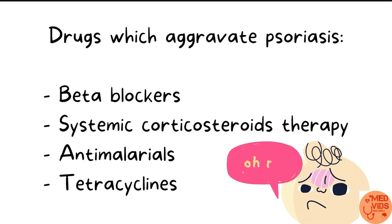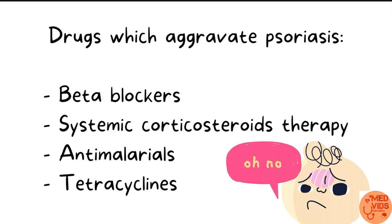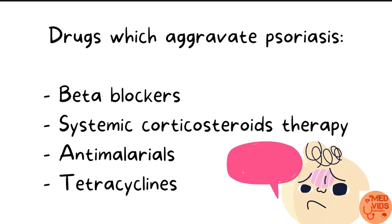Some drugs aggravate psoriasis. Beta blockers, commonly used for hypertension, can worsen psoriasis. One very important thing to remember is that systemic corticosteroid therapy can worsen psoriasis. Initially, corticosteroids may suppress psoriatic lesions, but when corticosteroid therapy is stopped suddenly, there will be sudden worsening and reappearance of a severe form of psoriasis — which is why systemic corticosteroid therapy is usually contraindicated in psoriasis. Anti-malarials and antibiotics like tetracycline can also worsen psoriasis.